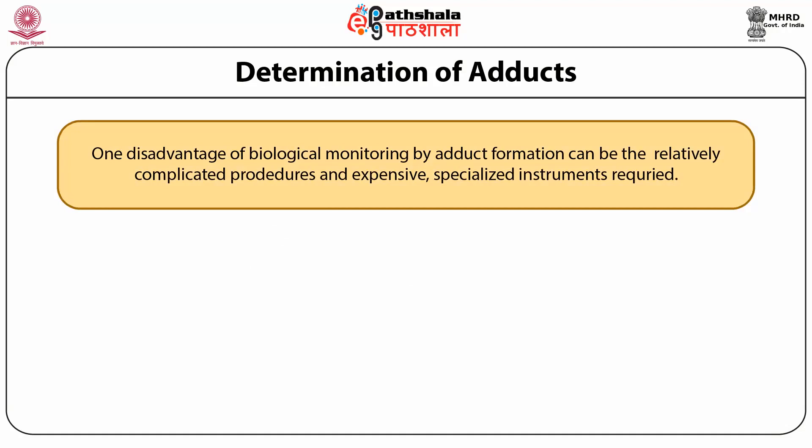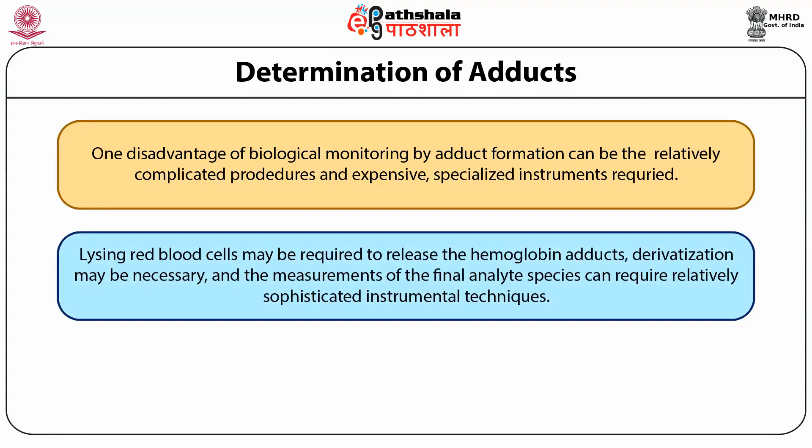One disadvantage of biological monitoring by adduct formation can be the relatively complicated procedures and expensive specialized instruments required. Lysing red blood cells may be required to release hemoglobin adducts, derivatization may be necessary, and measurement of the final analyte species can require sophisticated instrumental techniques. Despite these complexities, measurement of hemoglobin adducts is emerging as a method of choice for a number of xenobiotics including acrylamide, acrylonitrile, 1,3-butadiene, 1,3-dichlorobenzidine, ethylene oxide, and hexahydrophthalic anhydride.